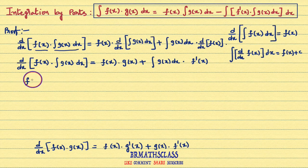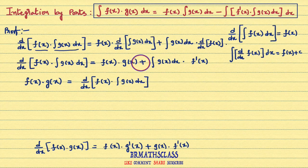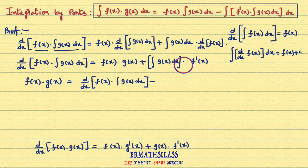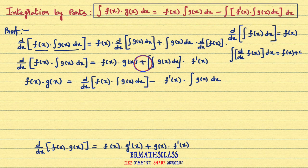By rearranging these terms, we get f(x) times g(x) equal to: d/dx of f(x) into integral of g(x) dx, minus — this plus becomes minus when moved to this side — f'(x) into integral of g(x) dx. You can observe here: this is one function and this is another function. As these two are a product of two functions, I can write f'(x) into integral of g(x) dx. I just rearranged the terms here to get f(x) times g(x).